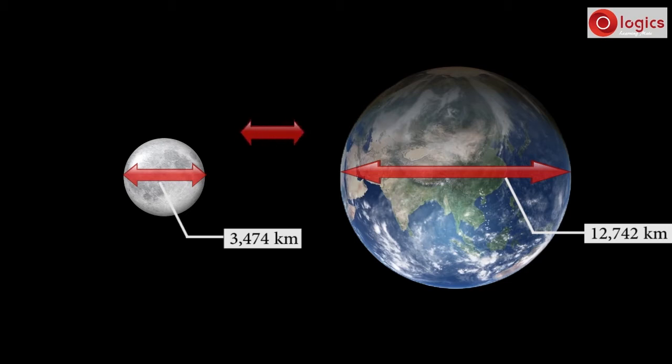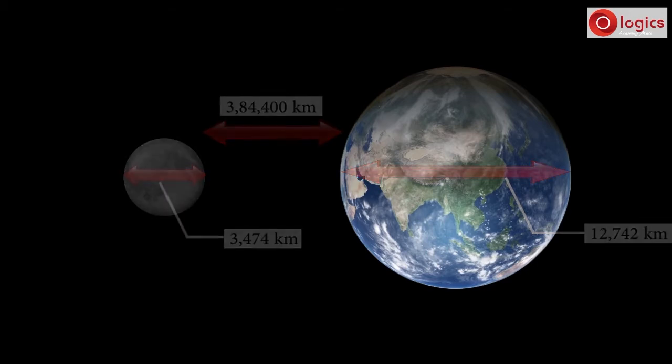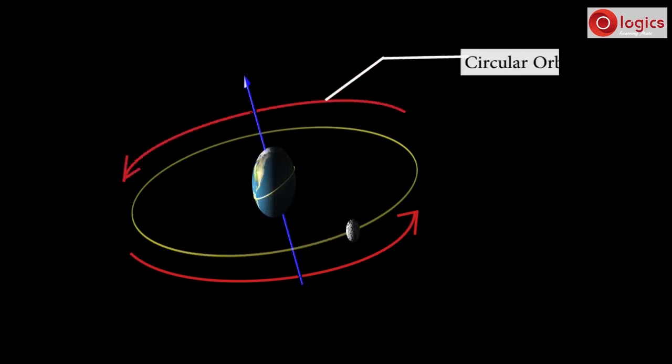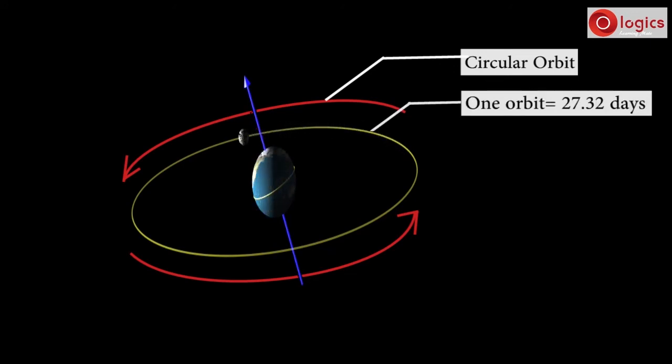The distance between Earth and Moon is 384,400 kilometers. Moon rotates around the Earth in a circular orbit. To complete one orbit it takes 27.32 days.